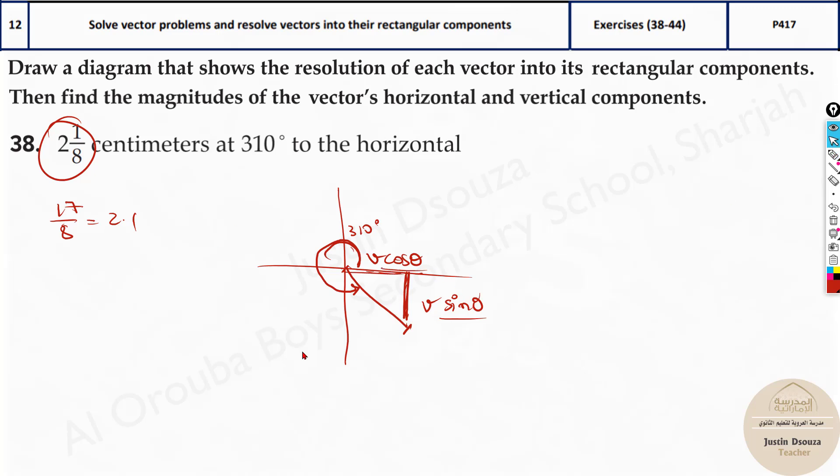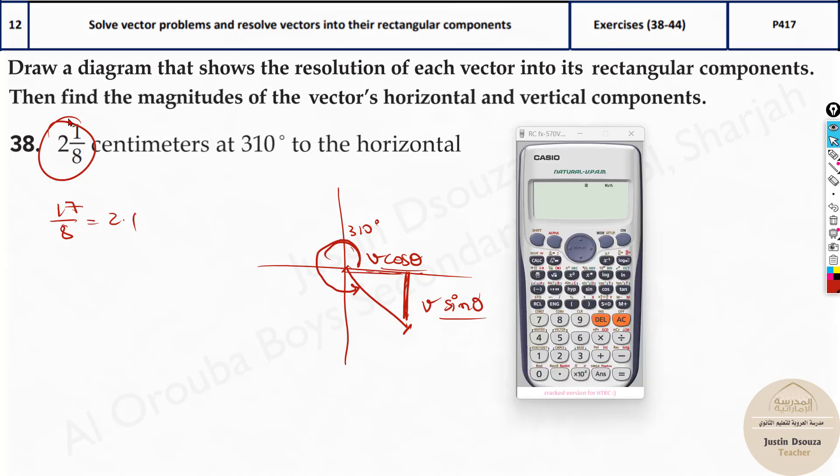Now we can just use our calculators and find it out. In your calculator, you can type 2 1/8 directly as well. You need to press shift and this fraction symbol, and you can type 2 1/8, so 1 by 8. And that is 17 by 8 as we got, just over 2.1. This multiplied by cosine theta. What is the angle? 310. And this is the answer. That is the horizontal component, 1.36.